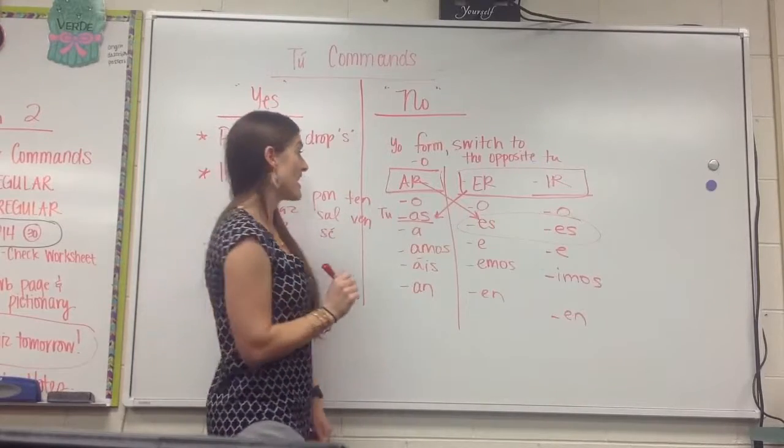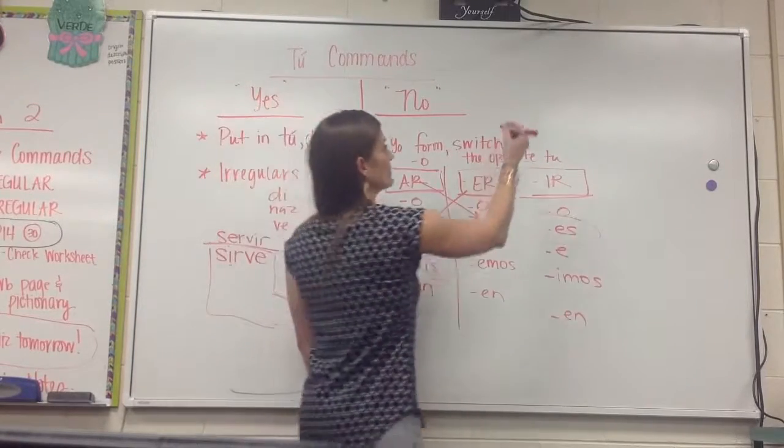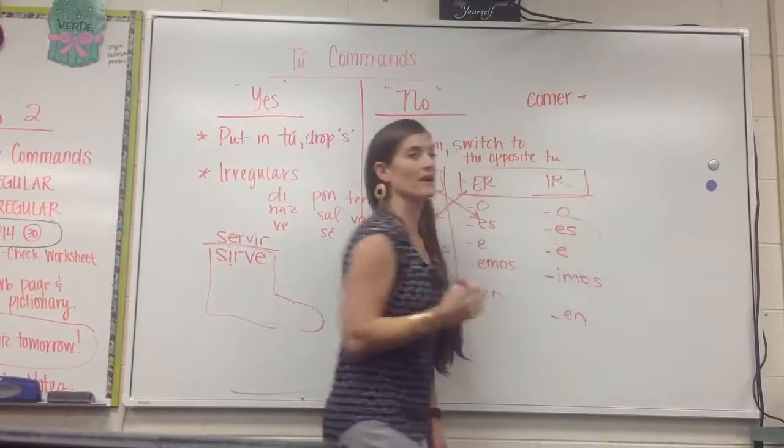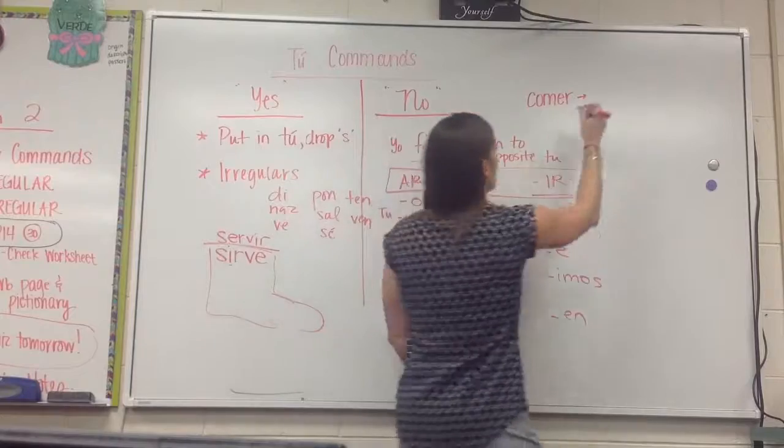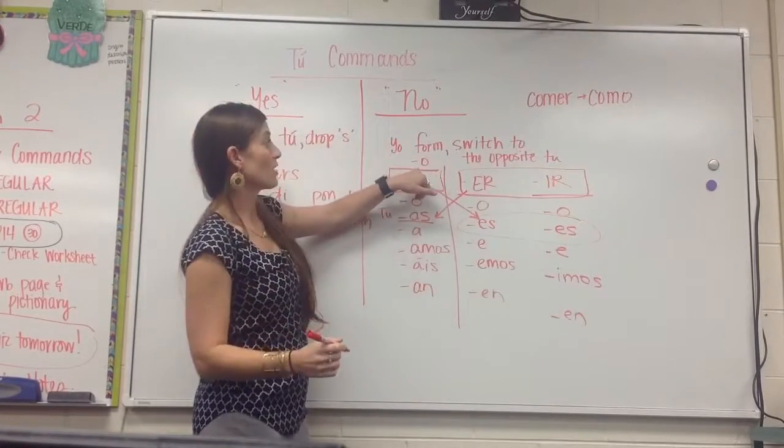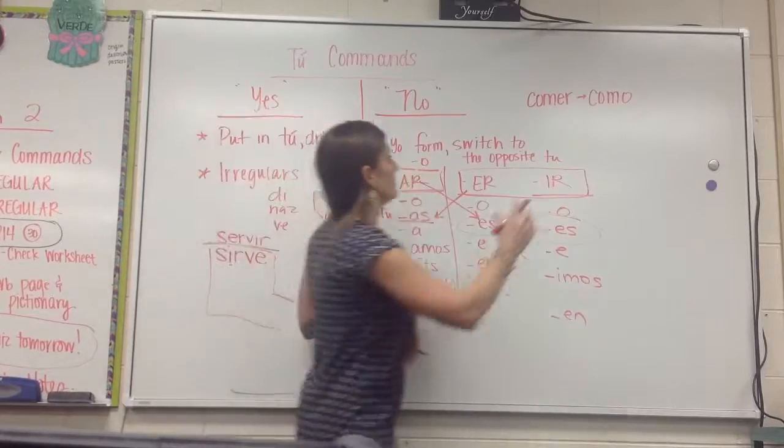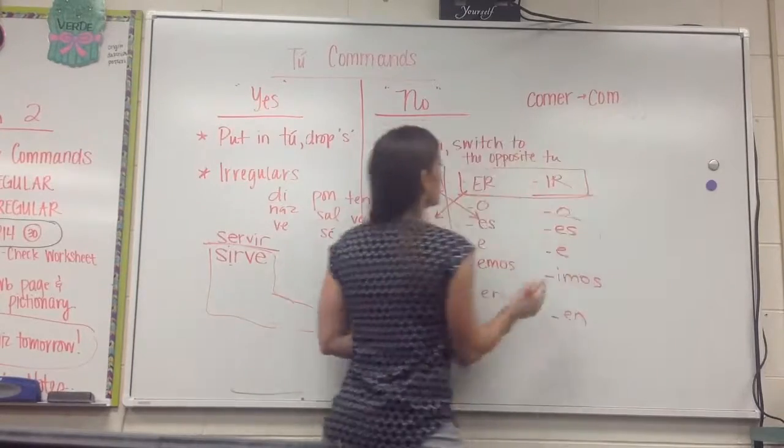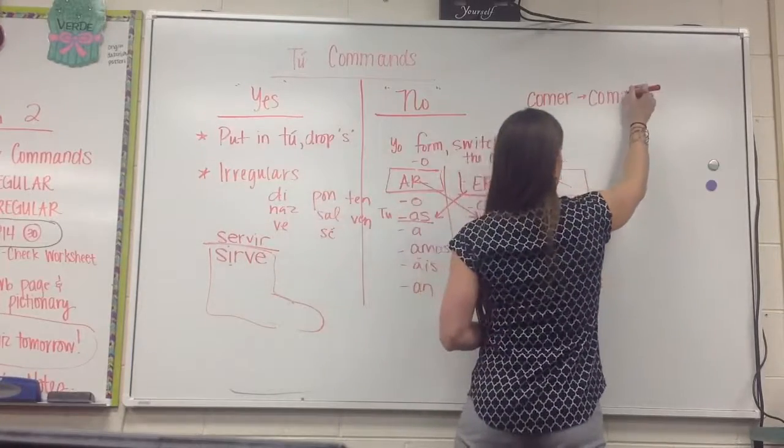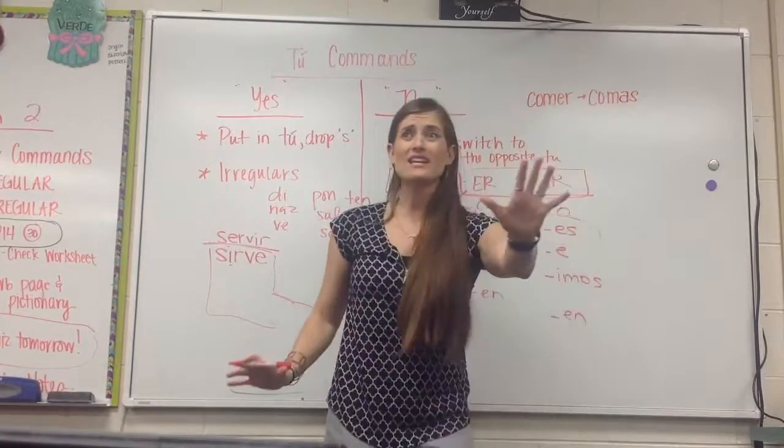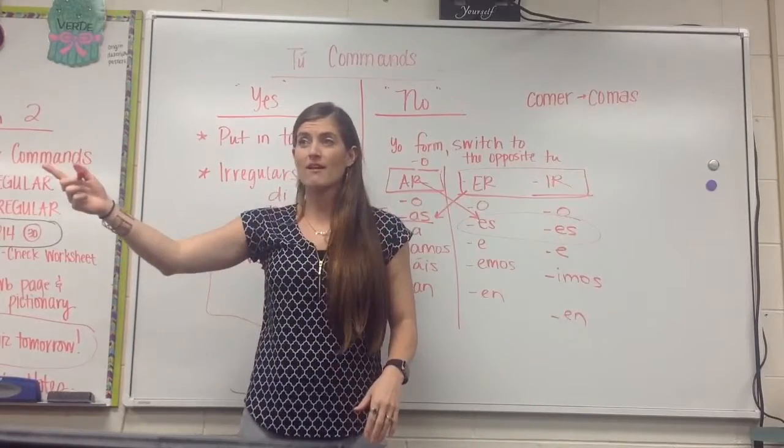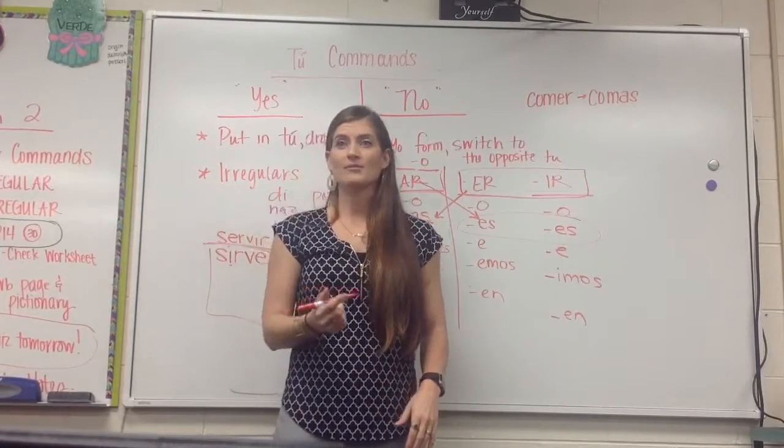Verbs that end with an er and an ir, in the regular present tense, will switch to what ending? A, S. As, so then, if I have the verb eat, comer, what's the yo form of comer? Como. Como. And then what do I do after I go to the yo form? Como. I drop the o, switch it to the opposite tú form. Comer is an ER verb, so it switches to as. So if I were to say, don't eat yellow snow, I say, no comas nieve amarillo.